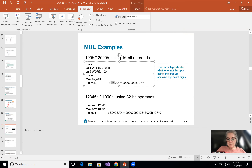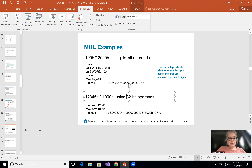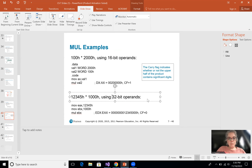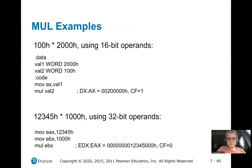In this next example, we are multiplying 12,345 hex times 1,000, using 32-bit operands. We first move 12345 into EAX. MUL expects something to be in EAX, and that's the multiplicand. The multiplier is put into EBX this time — instead of a variable, they put it into a register. You can use any other register, just don't use EDX.